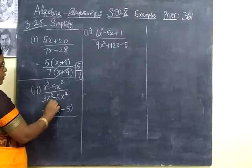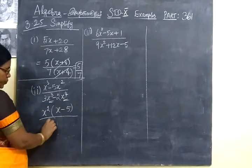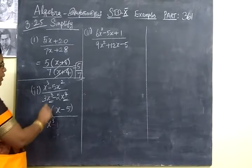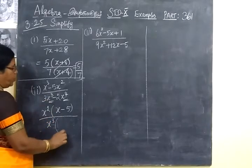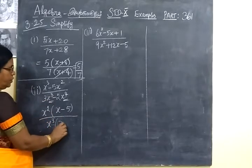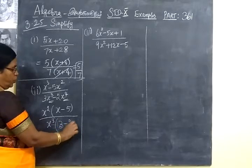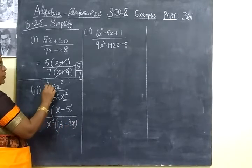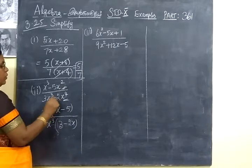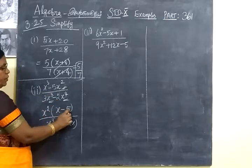In the denominator, you can take x cube. Greater square, common power in the x cube. So take x cube outside. So 3 minus 2x. Here x square common, so take x square outside. So 1x minus 5.